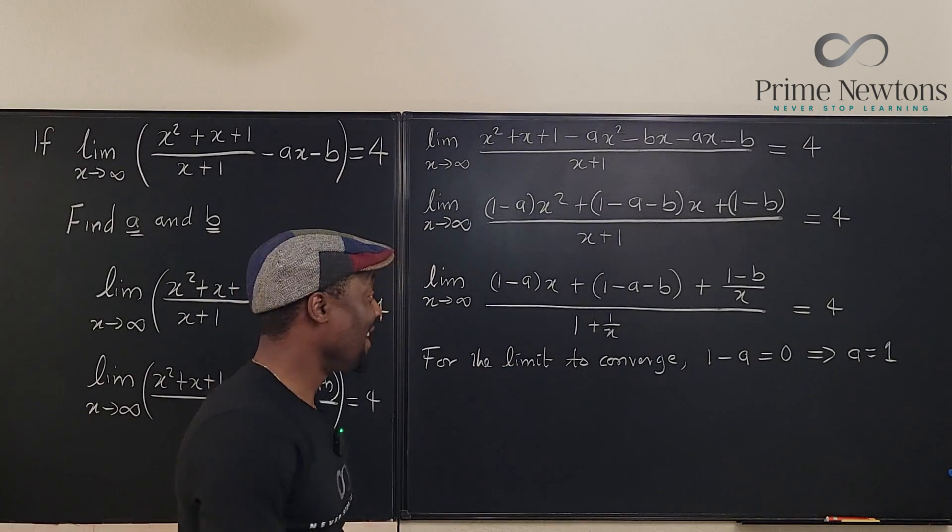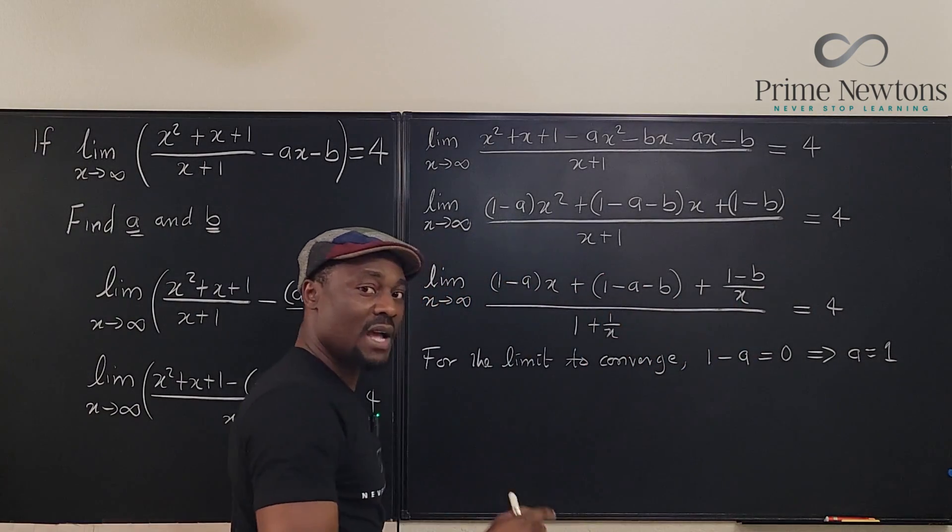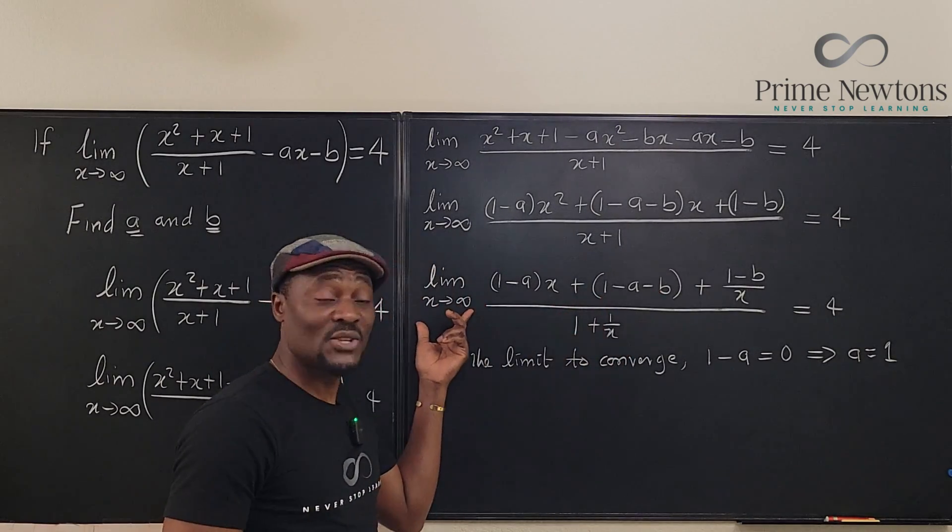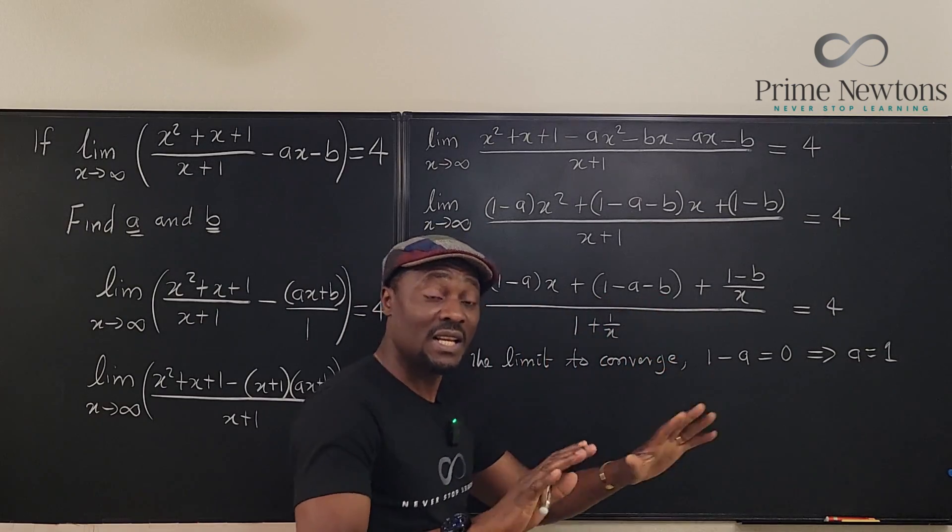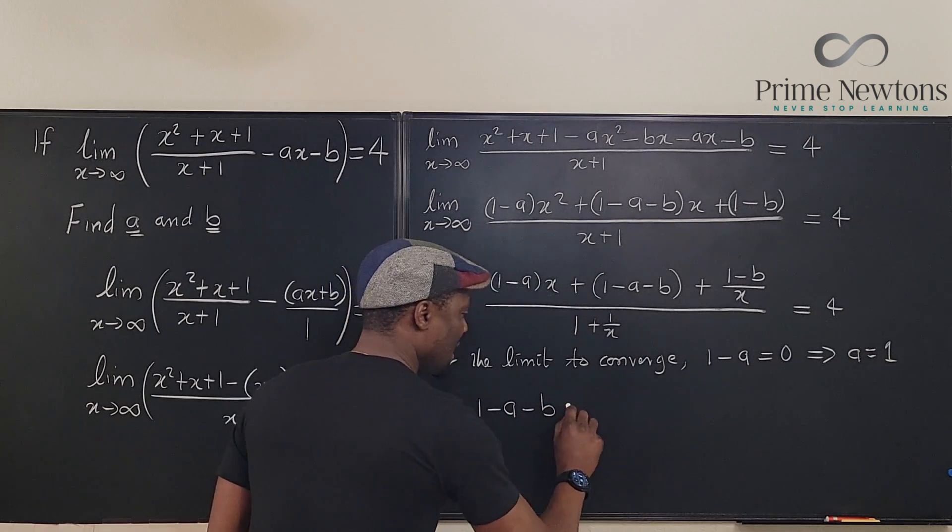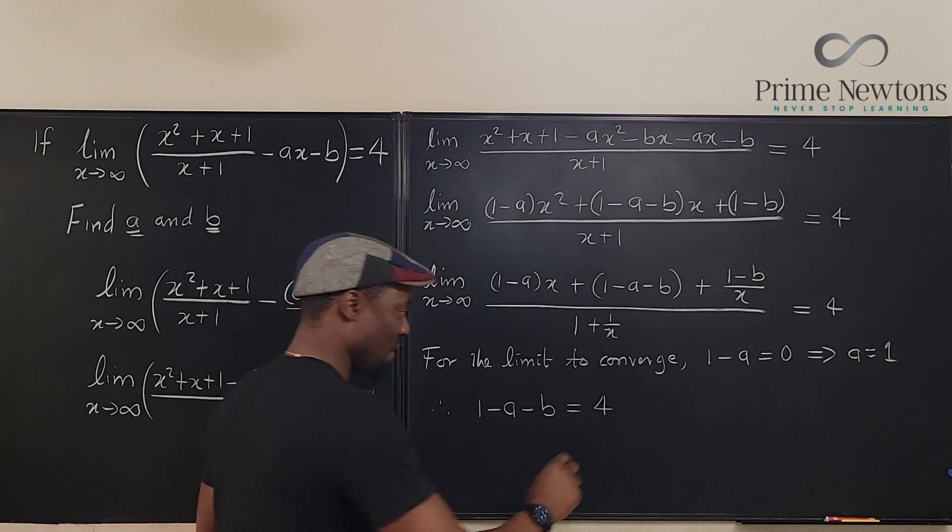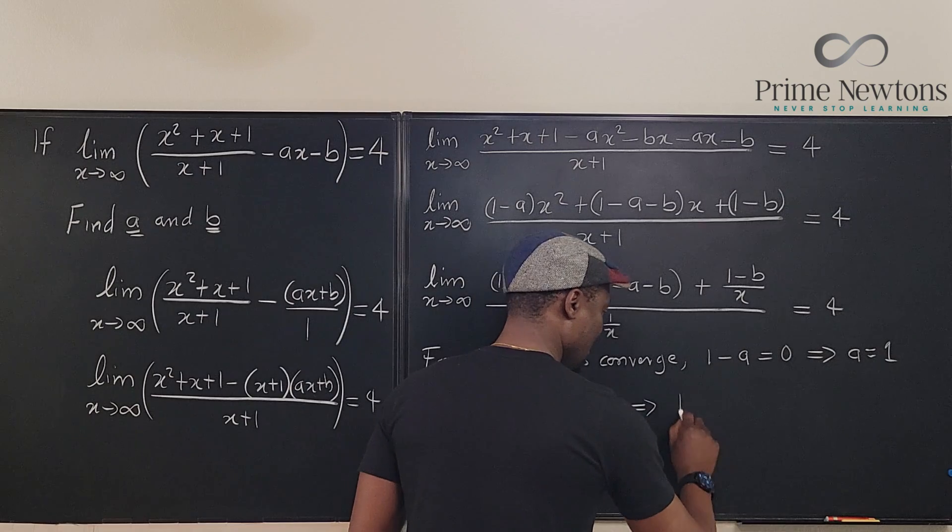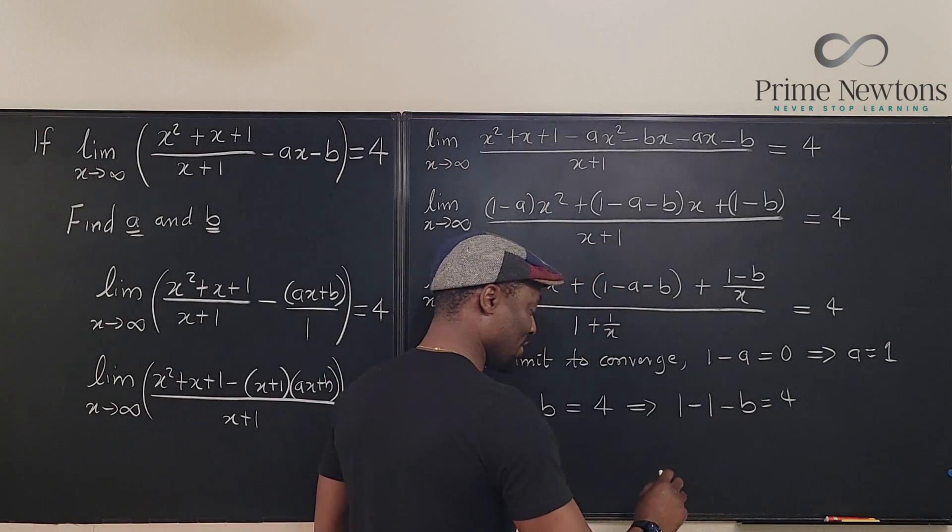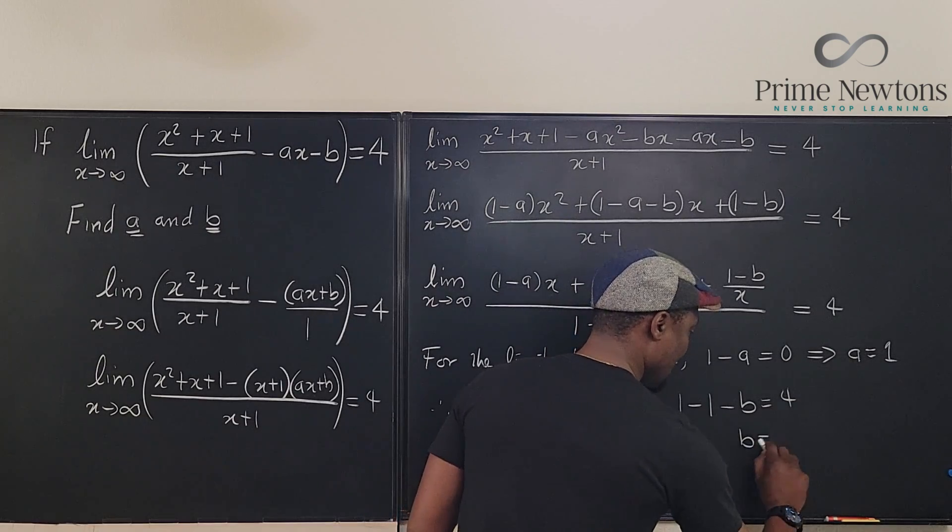From all the analysis I've done, the only part that remains is (1 minus a minus b). When you take the limit of a constant, it doesn't matter where x is going, your limit is that constant. So we can clearly say, therefore, 1 minus a minus b is equal to 4. But we know that a is 1, so 0 minus b equals 4. So we have b is negative 4.